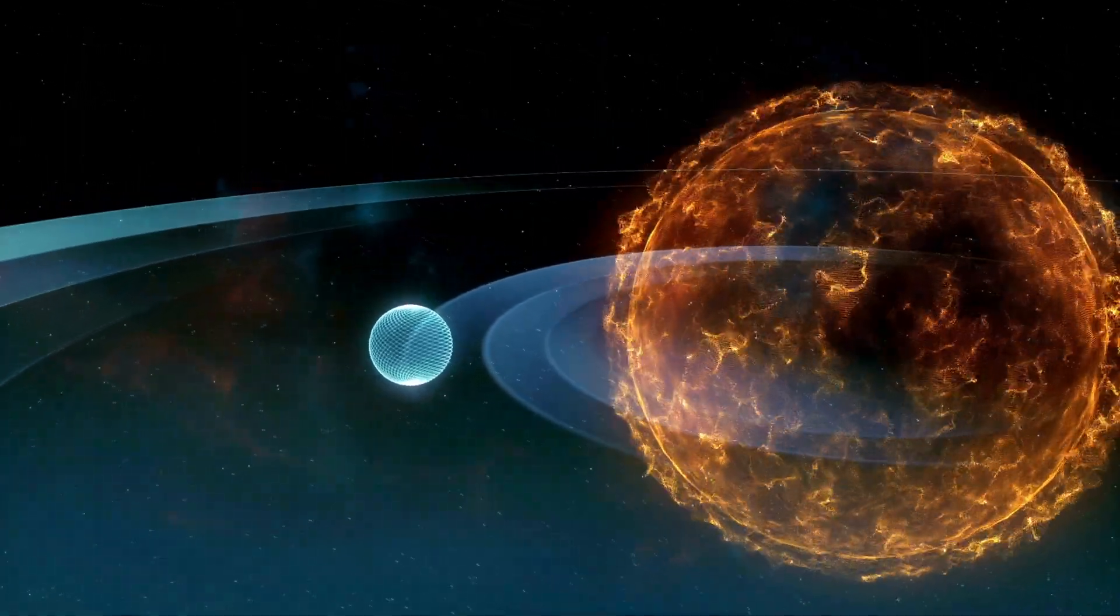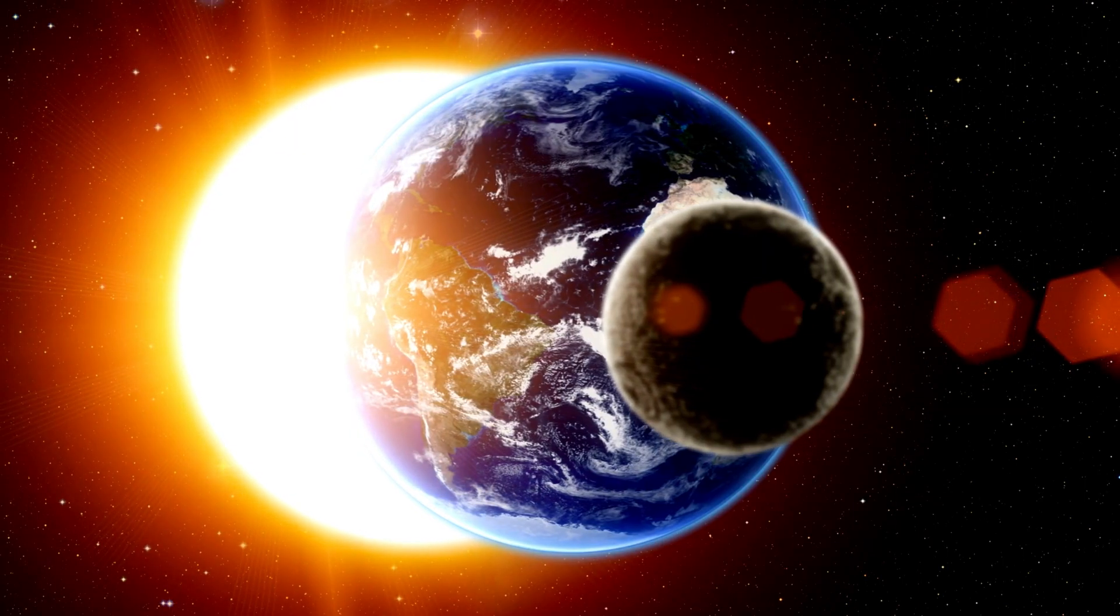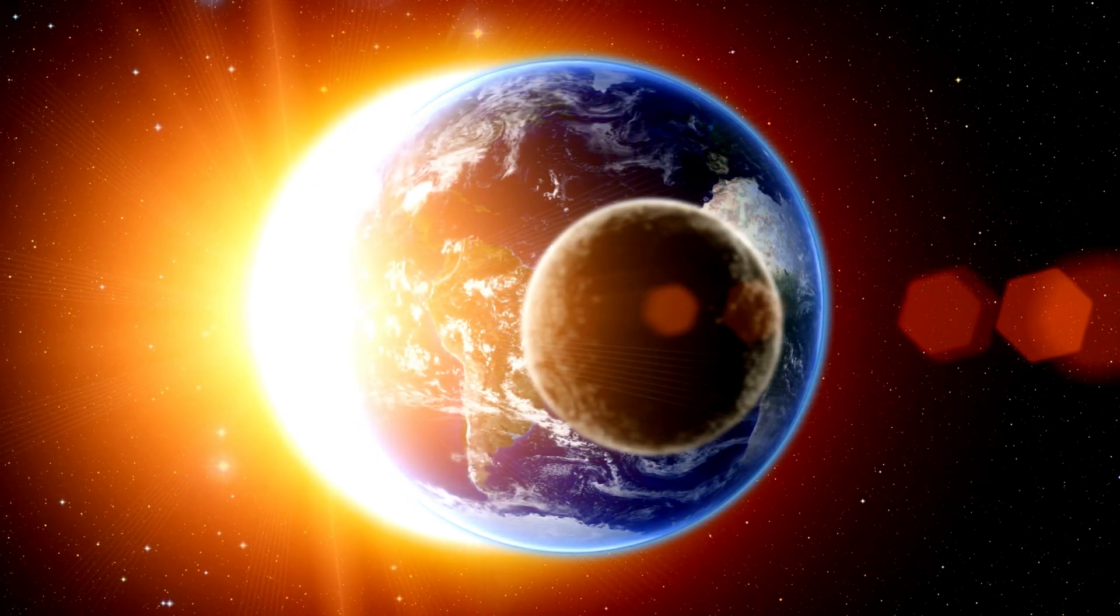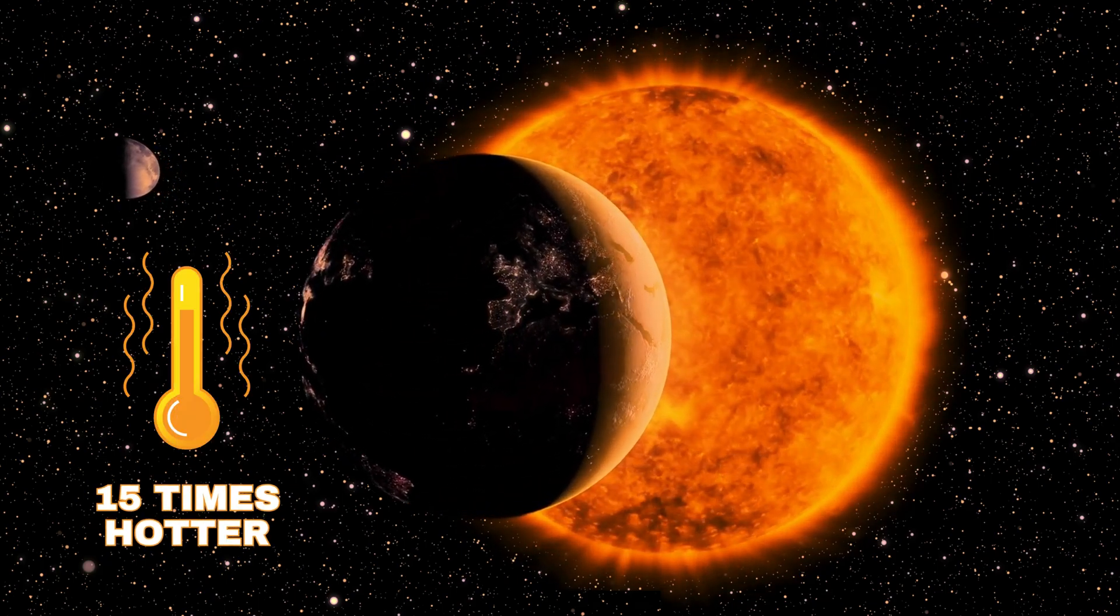The very side of our planet facing the sun would vaporize in an instant. Meanwhile, the other side, though momentarily spared the direct onslaught, would soon experience temperatures 15 times hotter than the sun's current surface.